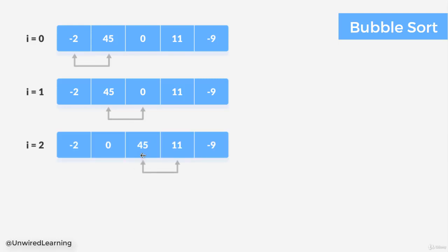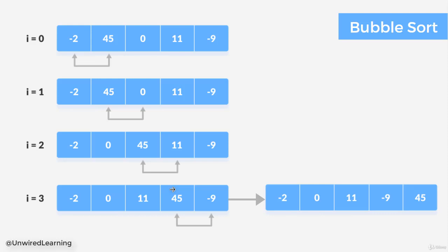Now we are going to compare index 2 with index 3. And if index 2 is greater than index 3, we are going to swap again. And following the same, index 3 with index 4, and 45 is greater than minus 9, so we swap again. So this is our first iteration cycle. That means we compare each adjacent element, and then by the end of our comparison we have one sorted element.